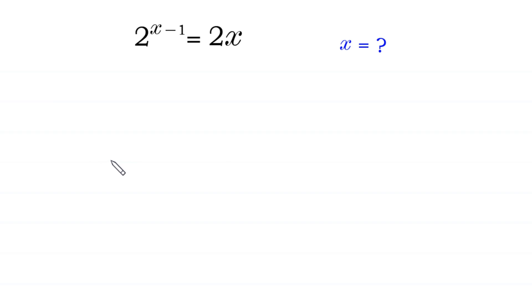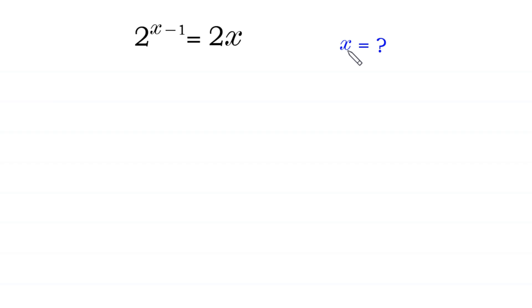Hello, welcome to how to solve this very nice exponential equation. 2 to the power x minus 1 is equal to 2x. We need to find all possible values of x.